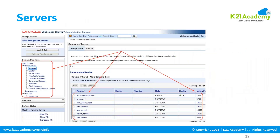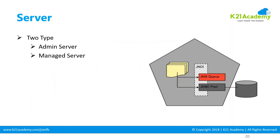There are two types of servers: Admin Server and Managed Server. We'll go a bit deeper into what these are. This is a screenshot from the graphical user interface called the Oracle WebLogic Administration Console. Once you configure the domain and start the Admin Server, you'll be able to log in and access this console. When you log in, on the left-hand side you expand Environment and see Servers. On the right-hand side you see Admin Server and the rest are called Managed Servers.